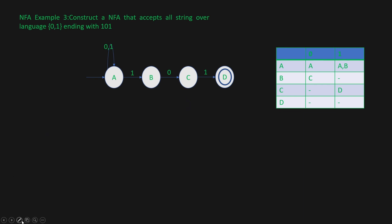Now let's trace the string 1,0,1,1. We start in state A. We get input 1, so we can go to either state A or state B. Now we get 0. If we are in state A and get 0, we stay in state A. If we are in state B and get input 0, we reach state C.